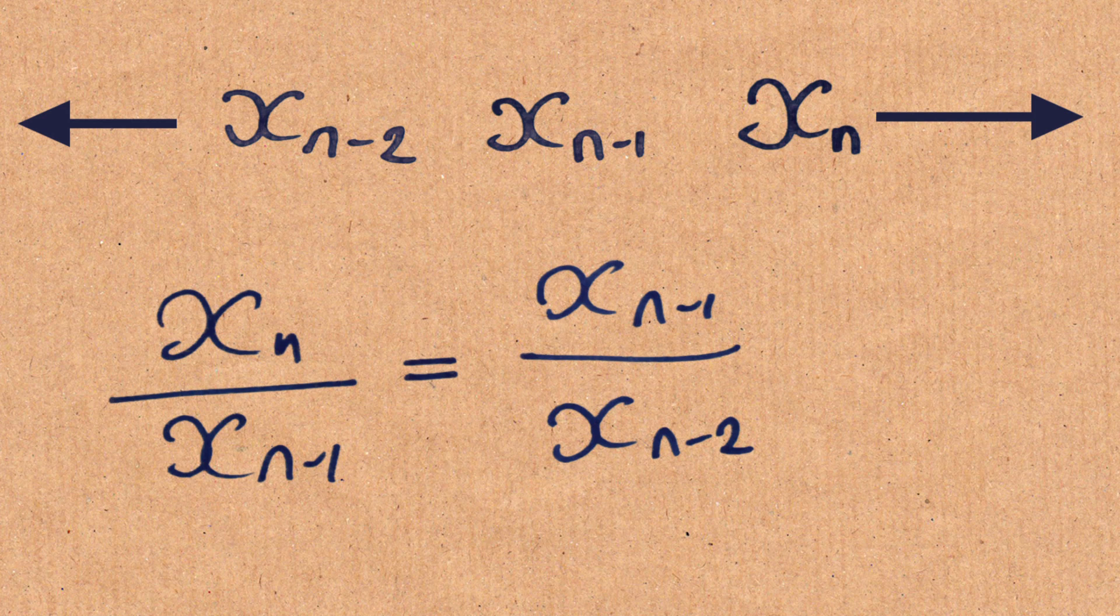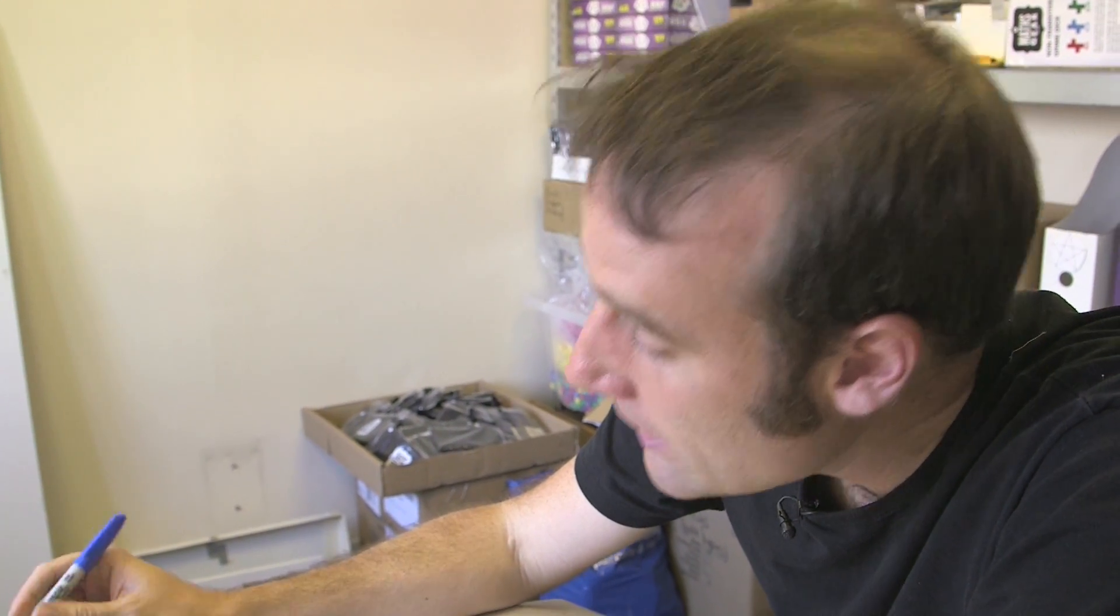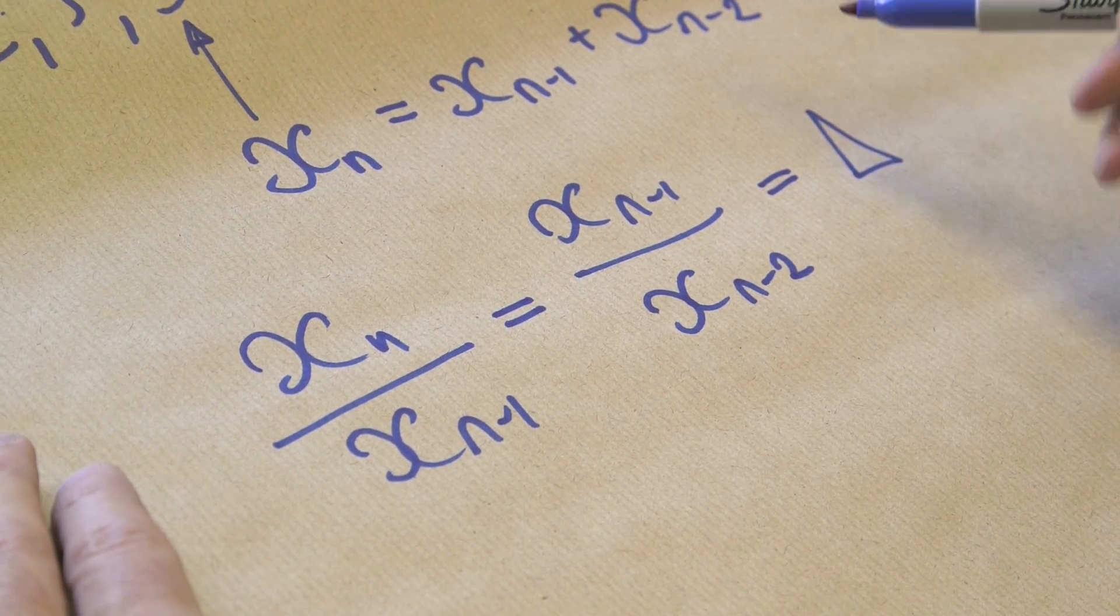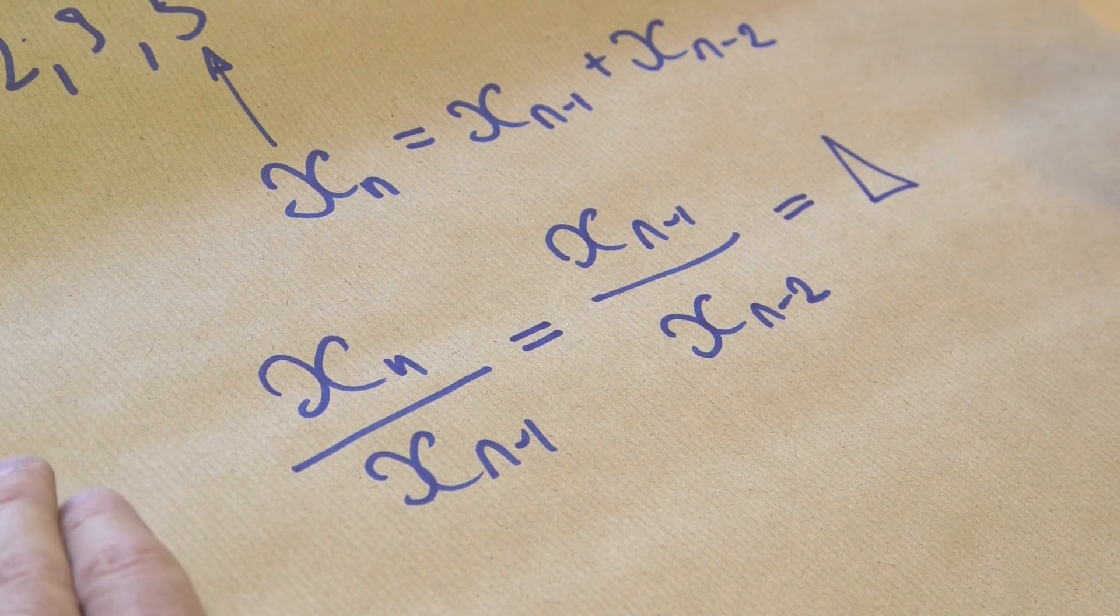And we're going to call it, what letter would you like, Brady, for any Greek letter? Do you have a favourite? Delta! Okay, so let's do a capital delta because it's quicker to draw. So we're trying to make up this ratio delta is, and we know it's the ratio between any two consecutive terms.